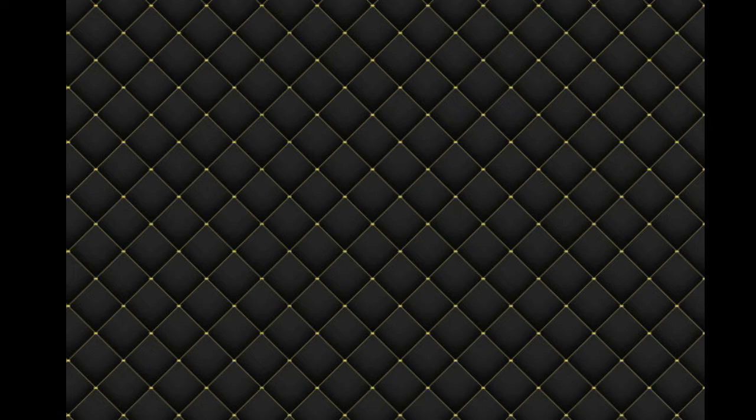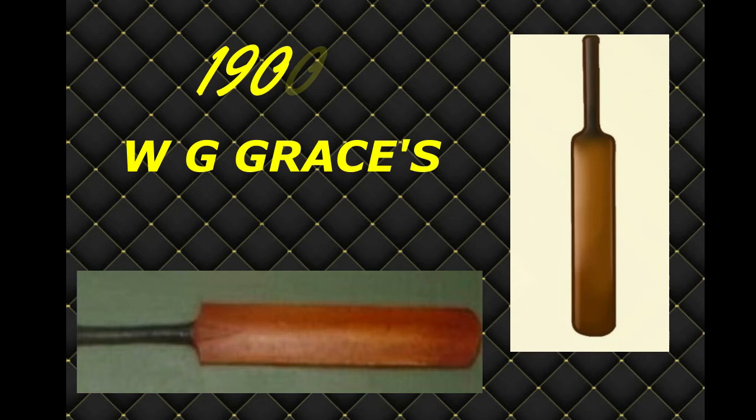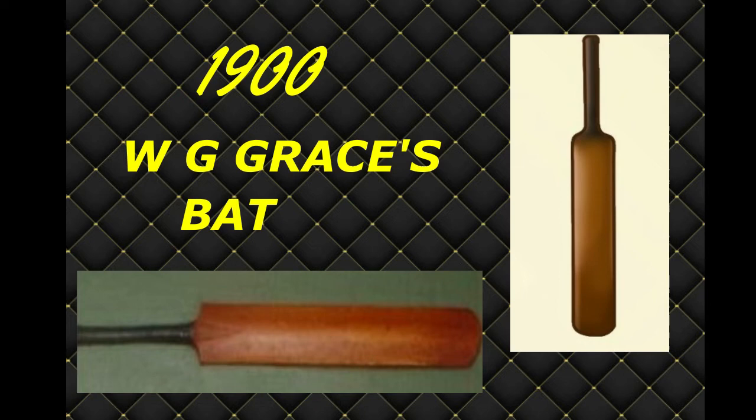From 1840 to 1900, the bat became slightly shorter and more symmetrical with flat edges and a flatter bottom. This was the first time a spring was used in the handles of the cricket bat. By this time, overarm bowling was widely used in cricket. Handles became intricate constructions and were nearly all made of cane with rubber grips.